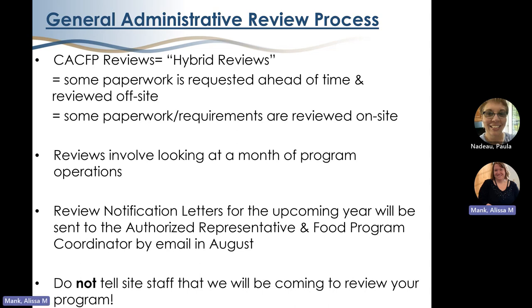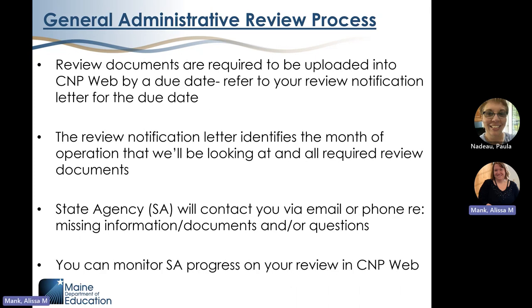When we review your program, we look at program records for one month of operation. We'll be sending out all review notification letters for the upcoming agreement year — those letters have actually been sent out already. The review notification letters will be emailed to both the authorized representative and the food program coordinator identified in the sponsor application section of your agreement. We are required to do unannounced reviews, so it's important that you do not tell site staff about upcoming reviews. The review notification letter identifies the month of operation we'll be reviewing and includes a list of all documents to upload in CNPweb, as well as paperwork and requirements we'll be reviewing on site.